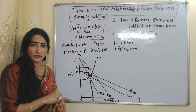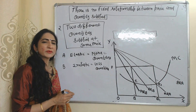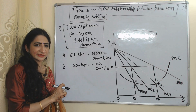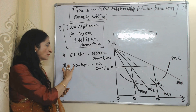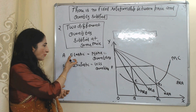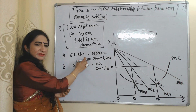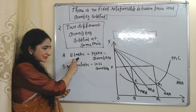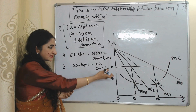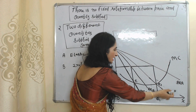Now we will see the second case, where the monopoly is selling two different quantities at the same price. There are two markets — A and B. The monopoly is charging the same price from both Market A and Market B, but selling more quantities in Market A because demand is elastic, and selling less quantities in Market B because demand is inelastic. We will see the same thing in this diagram.